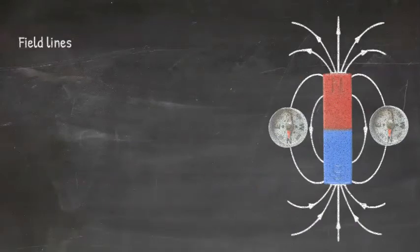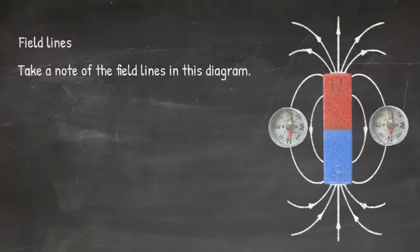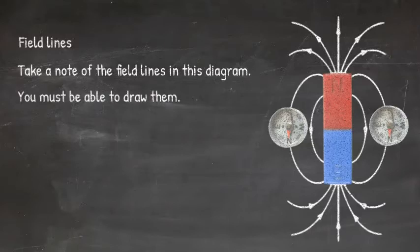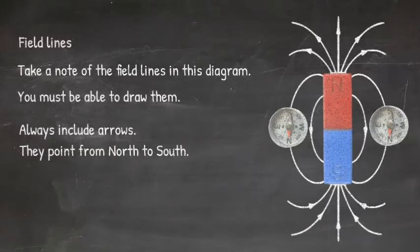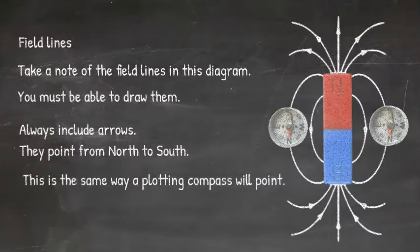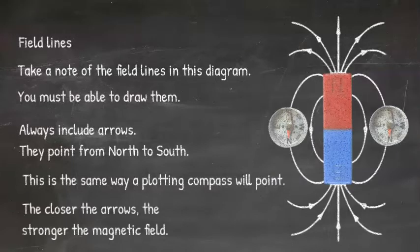A quick pointer about field lines. Take a note of the field lines of this diagram. You must be able to draw them. Always include arrows, they point from north to south. This is the same way a plotting compass will point. And remember, the closer the arrows, the stronger the magnetic field.